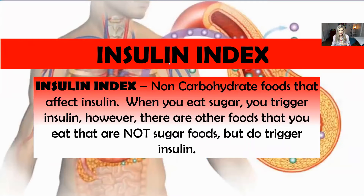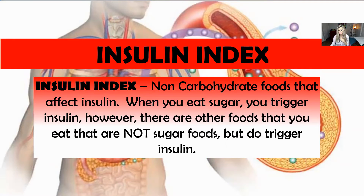High glycemic foods are going to cause insulin resistance, and that's going to make your ability to heal your body, lose weight, and do whatever you want to do very difficult. There's also an insulin index — most people don't even know what that is. The insulin index covers non-carbohydrate foods that affect insulin. When you eat sugar you trigger insulin, but there are foods that are not sugar foods that also trigger insulin: flour, certain chemicals, toxins in the body, and also sugar alcohols.